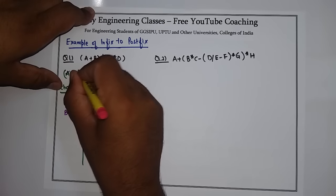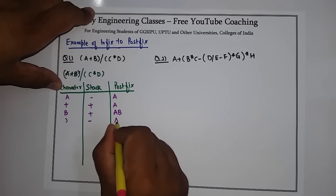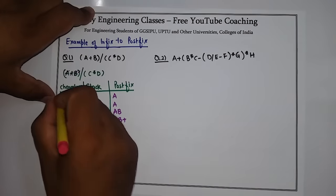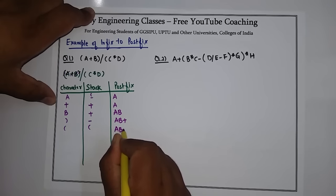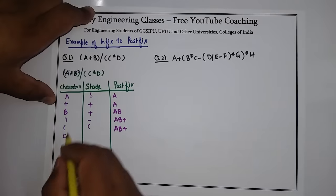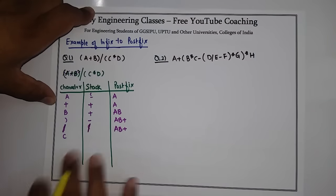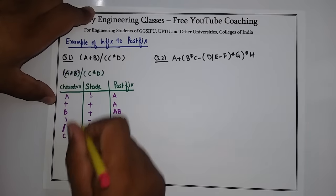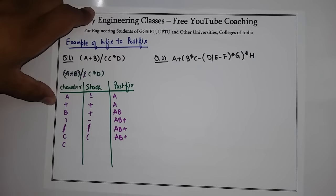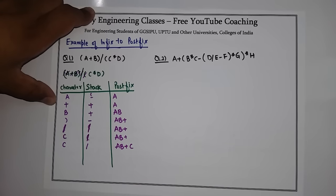Now we see a right parenthesis, so we pop the stack — the stack becomes blank and the popped operator goes into the postfix, giving A B plus. After that, a left parenthesis is encountered so we insert it into the stack. The postfix remains A B plus. Then we encounter a division sign, so we append it into the stack. Now C is encountered — C is an operand, so we add it to the postfix, giving A B plus C.